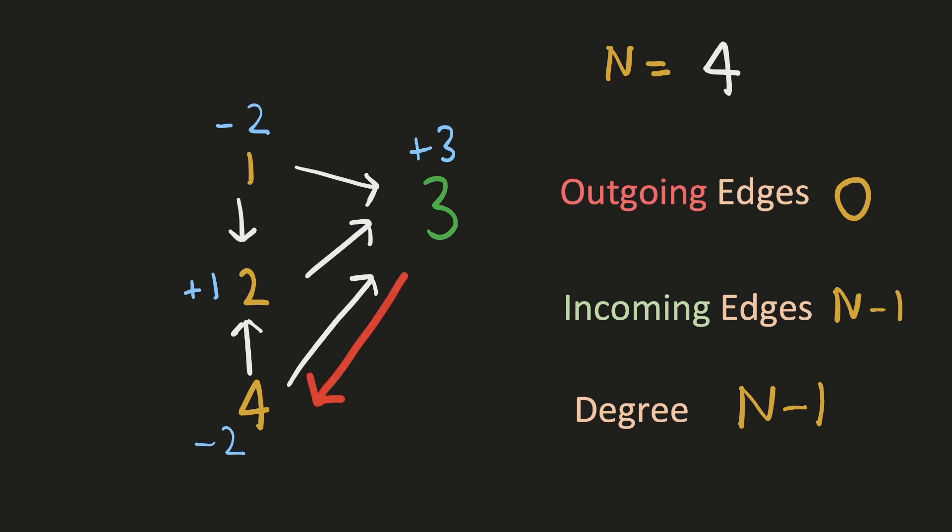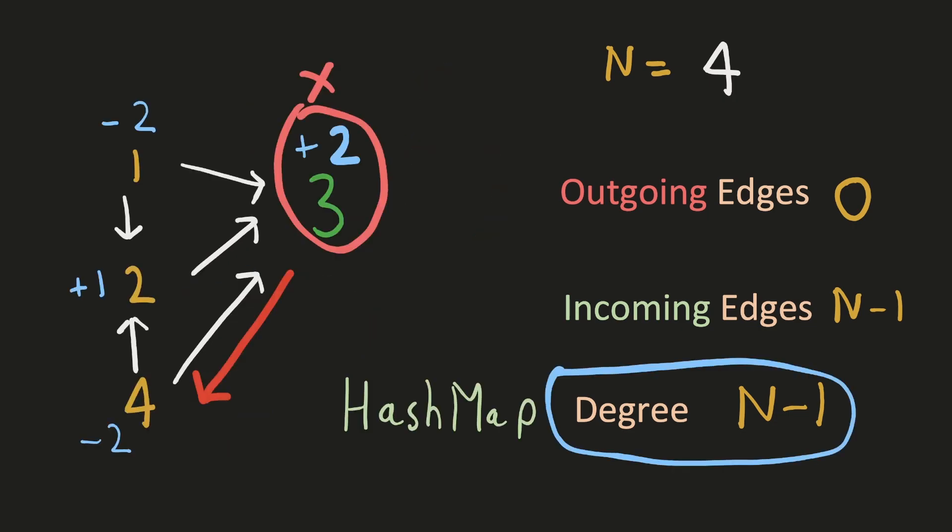Let's see what happens to the degree when the judge trusts somebody else in the town. In this case, the degree will reduce by 1 and since it will no longer be n-1, it cannot be the town judge anymore. So to solve this problem we have to track the degree of each person in the town, and if the degree of any person is n-1, he will be the town judge.